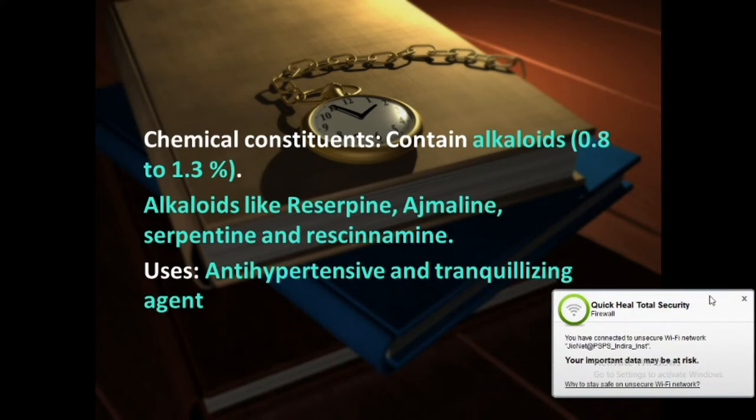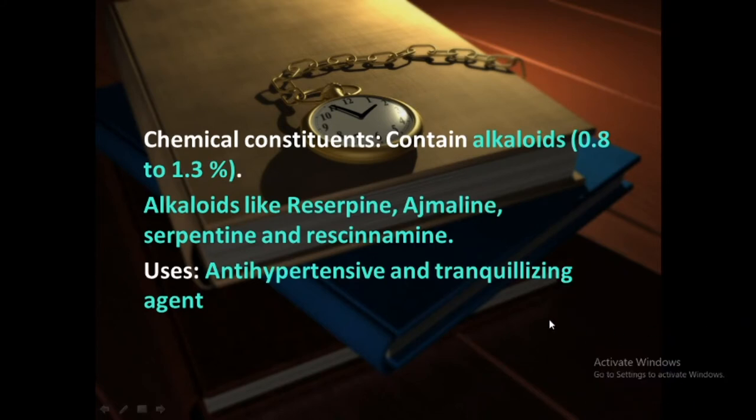These alkaloids in Rauwolfia are indole alkaloids, meaning they contain the basic ring that is the indole ring — a heterocyclic ring in their structure — and which are synthesized from the amino acid tryptophan. Tryptophan is the most important precursor for the synthesis of Rauwolfia alkaloids, because these are indole alkaloids containing the indole ring in their structure.